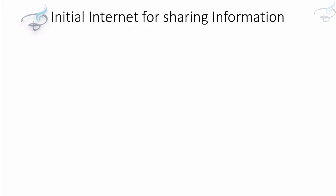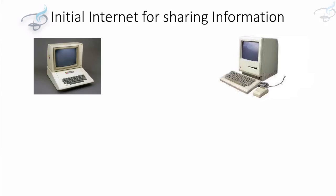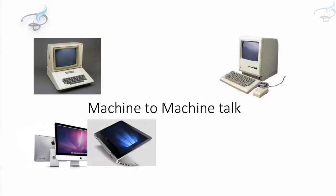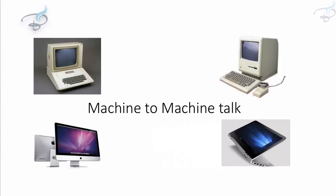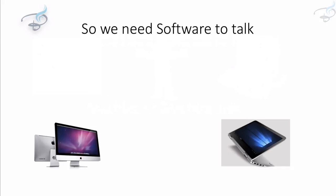In the beginning of the internet, it was designed to share information between one computer and another placed apart. But we are living in 2017, which means we need machine-to-machine talking. Suppose you have one machine and another machine — both machines run on different operating systems, different languages, different situations — and they have to share data between them, all without the involvement of humans. The actual soul of any machine is its software, so we need softwares to talk.